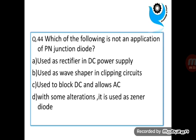Question 44. Which of the following is not an application of PN junction diode? Use to block DC and allows AC.